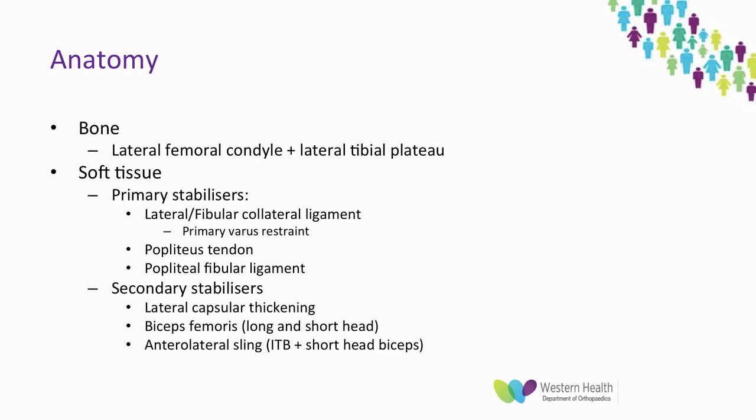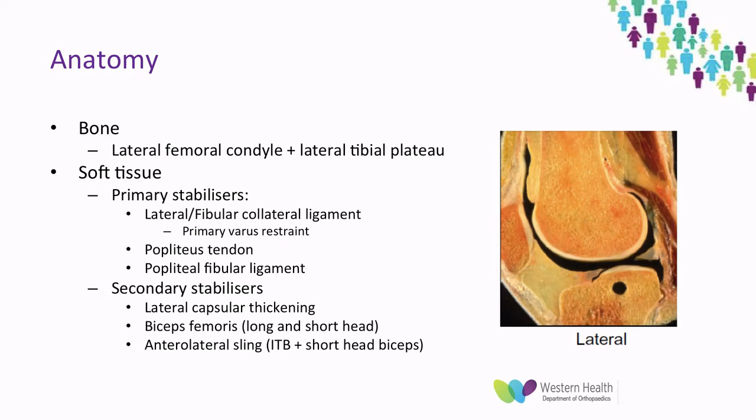Looking at the anatomy — first, the bony anatomy. It's important to realise the medial and the lateral side of the knee are different. On the lateral side, we have a convex lateral femoral condyle and a convex lateral tibial plateau, which makes it more inherently unstable than the medial side. This does not allow posterolateral corner injuries to heal very well.